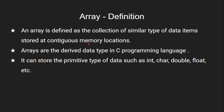What does it mean? The first element is stored in one location in memory, then the next elements are stored in continuous locations. Arrays are the derived data type in C programming language — in any programming language, arrays are derived data types.